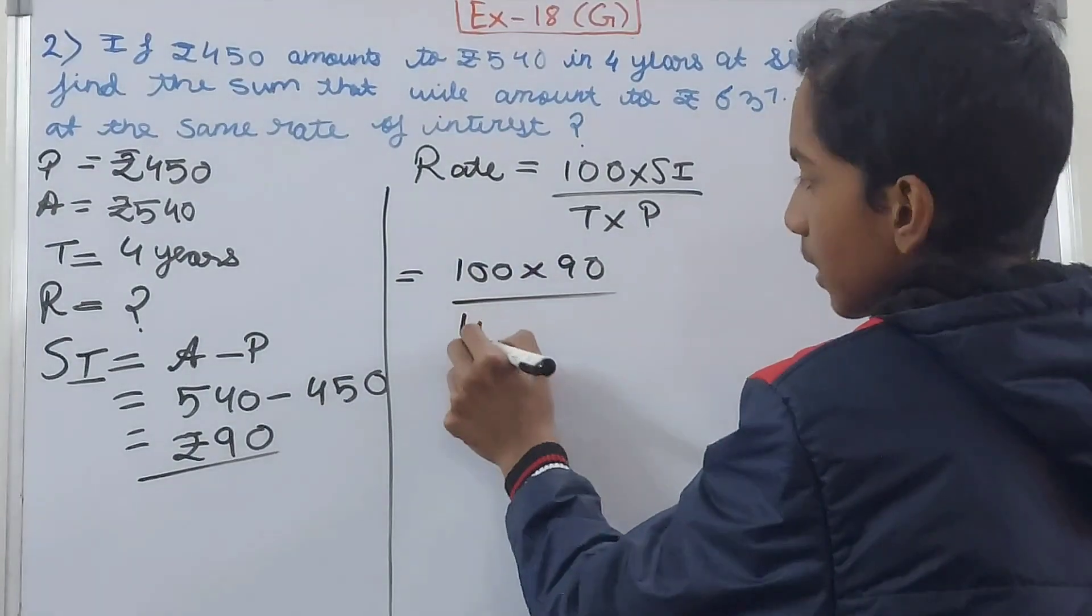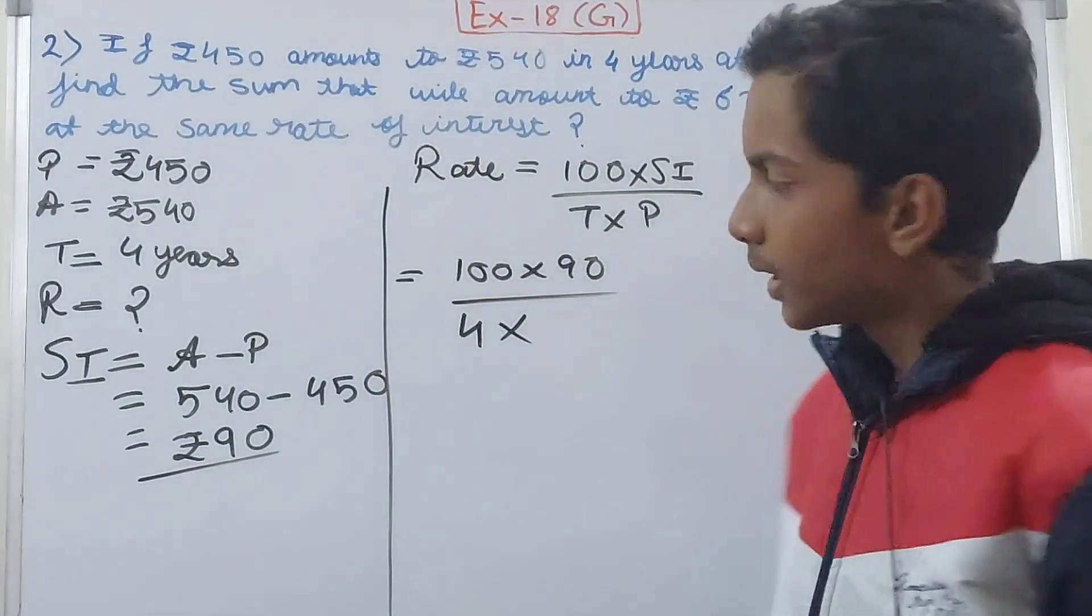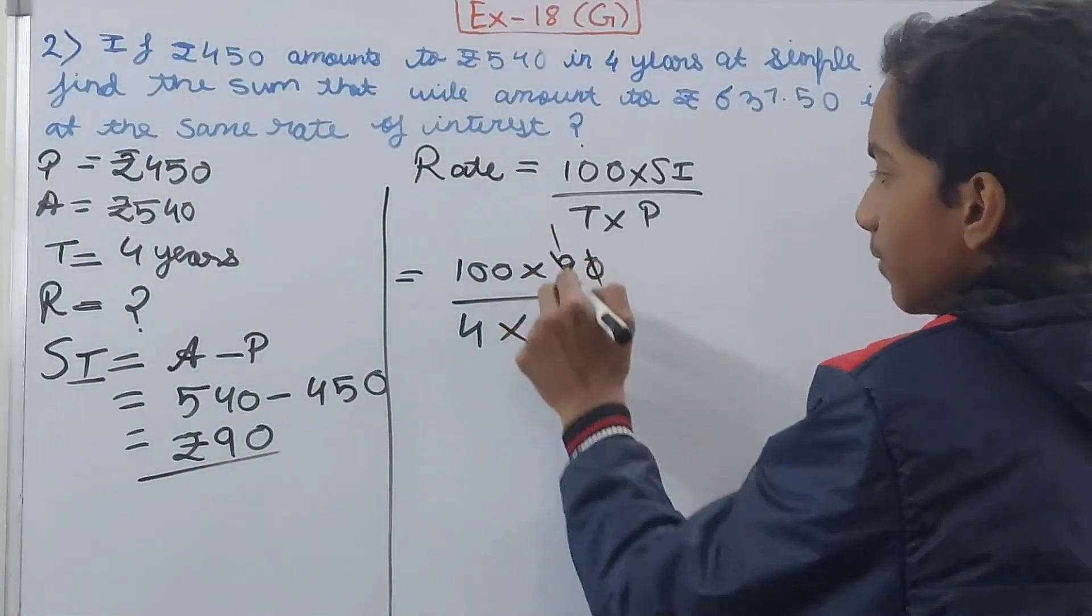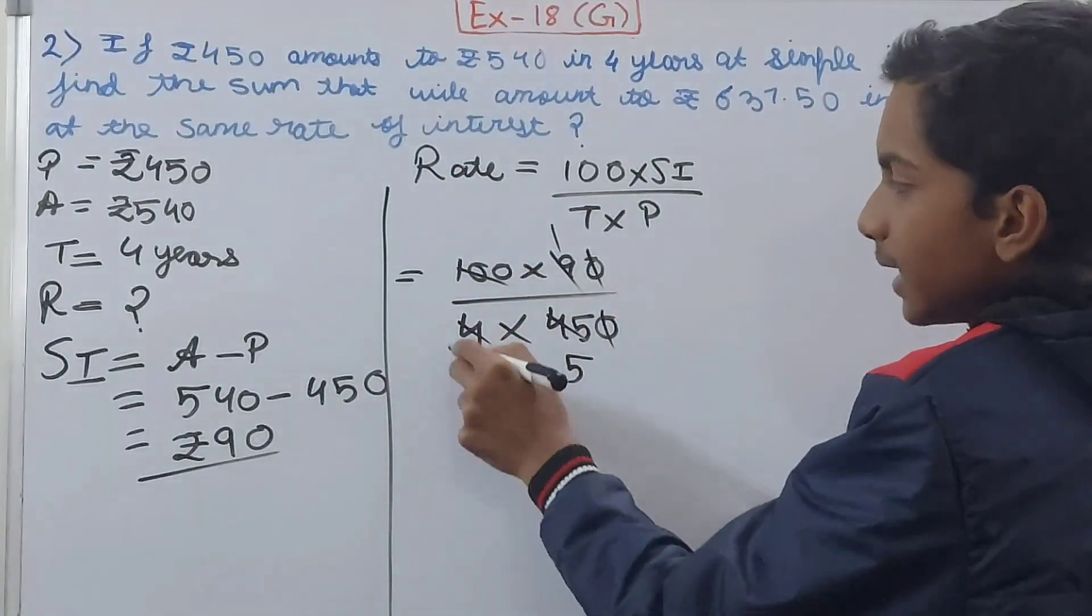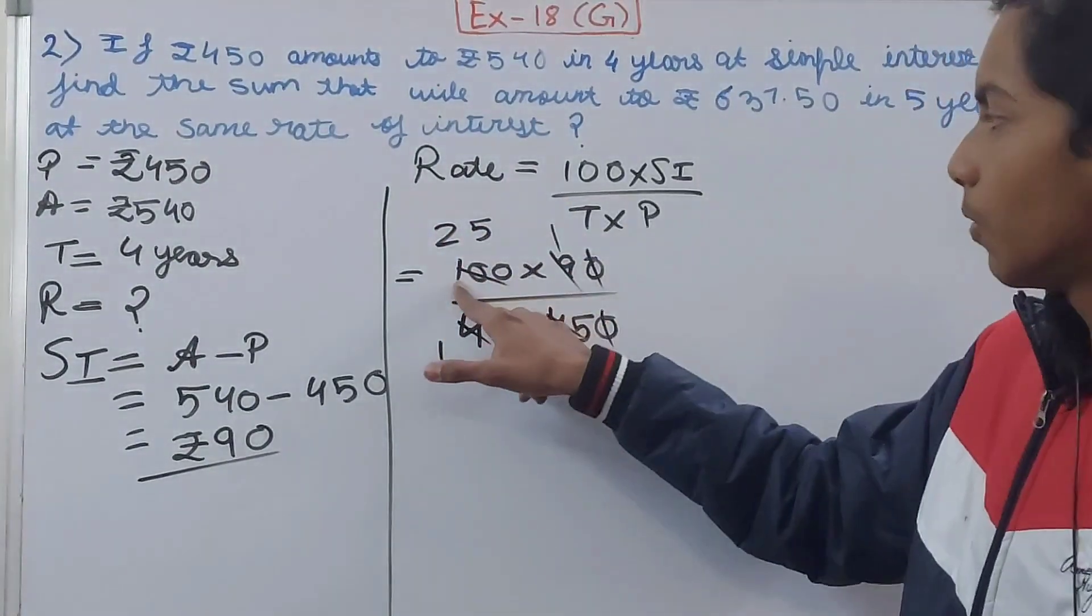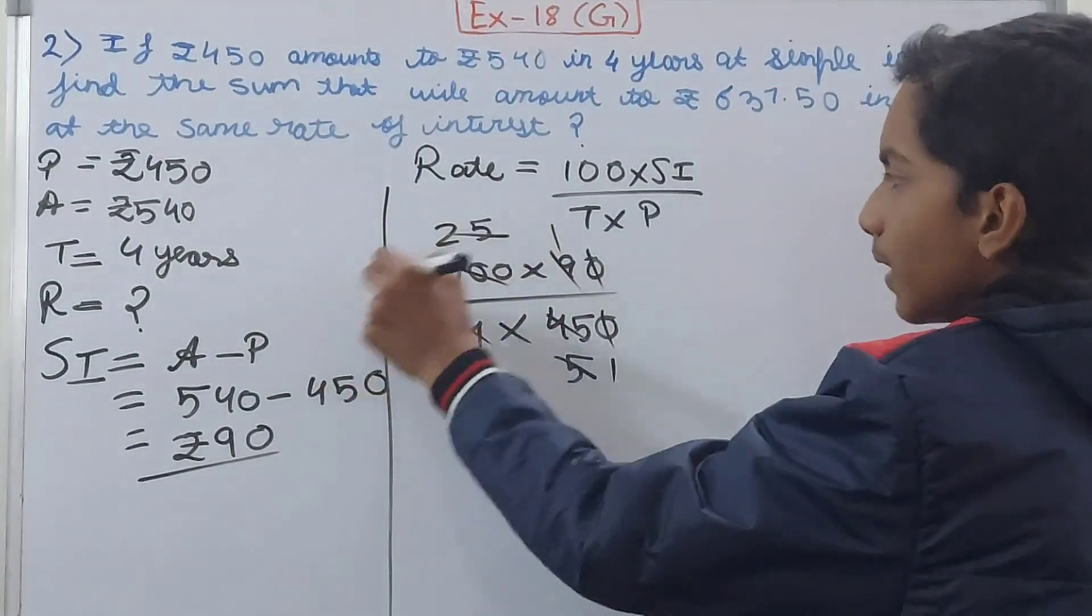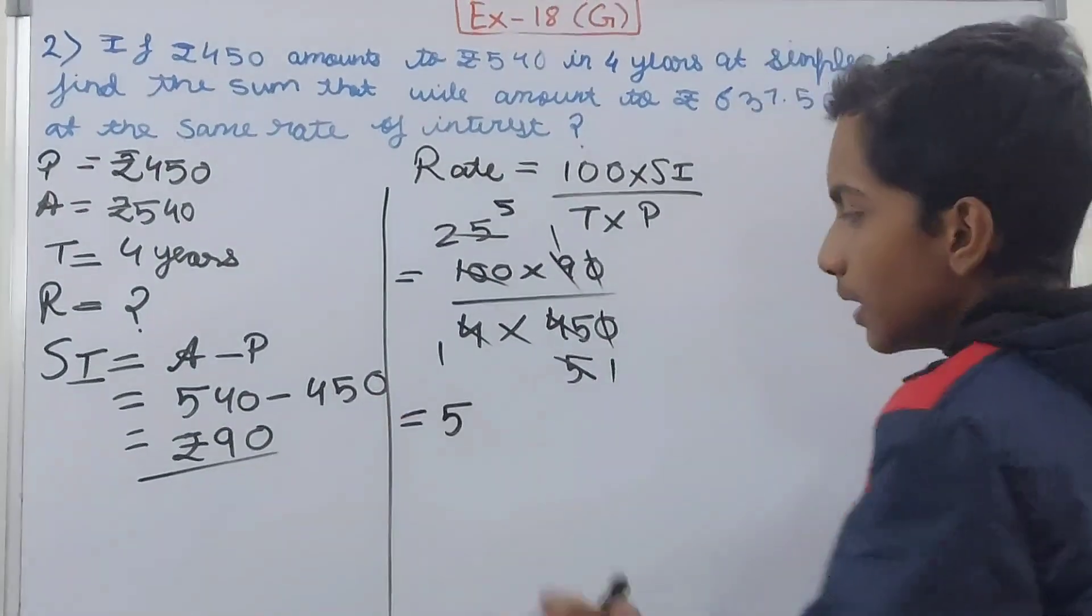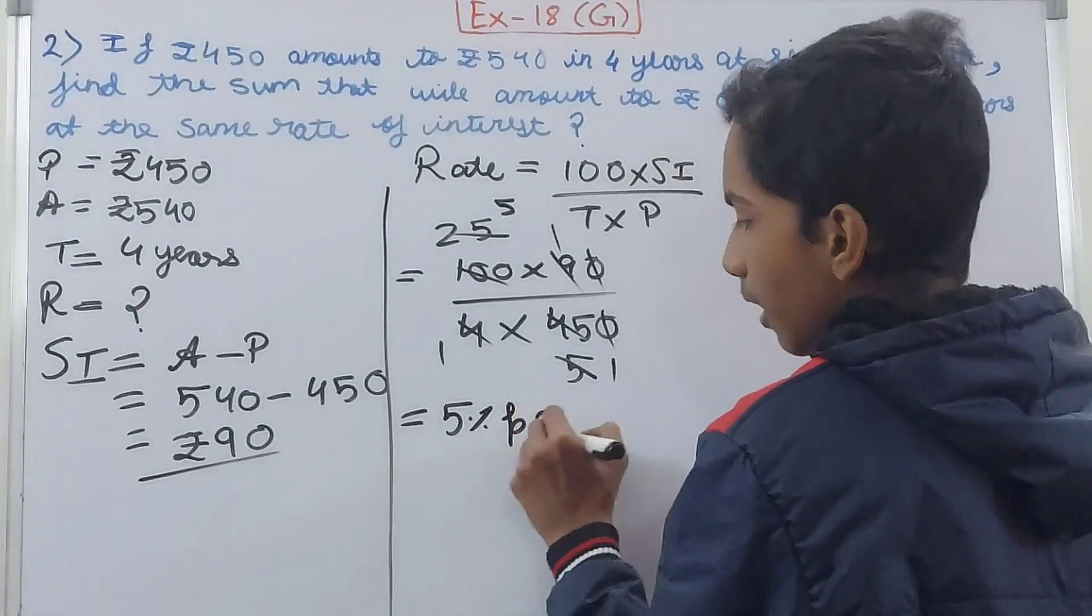With this only we will find our rate. So 100 × SI = 100 × 90 upon time 4 years × principal ₹450. Cut this zero, cut this zero, 9 goes 1 time, 45, 5 times by 9, then 4 and 100 will be cancelled, so 1 and 25 by 4. 25 goes 5 times by 5. So at last we get 5% per annum rate. This is our rate of interest.